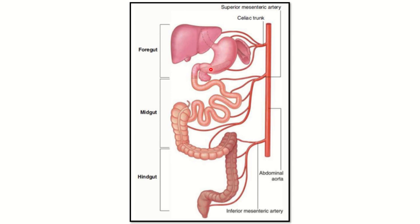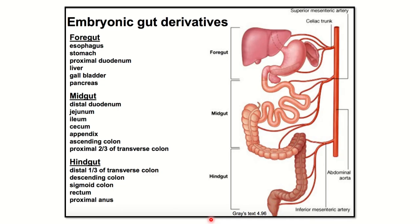From the midgut: duodenum, jejunum, ileum, appendix, ascending colon, hepatic flexure, and right two-thirds of the transverse colon. From the hindgut: left one-third of the transverse colon, splenic flexure, descending colon, sigmoid colon, rectum, and part of the anal canal.